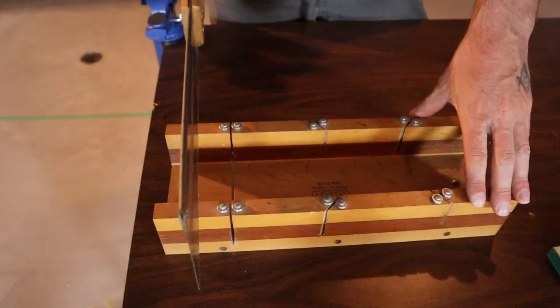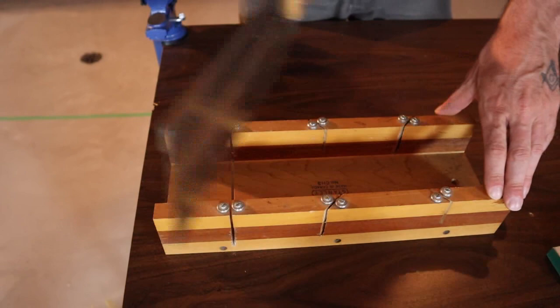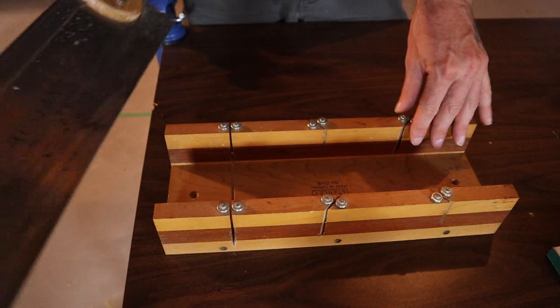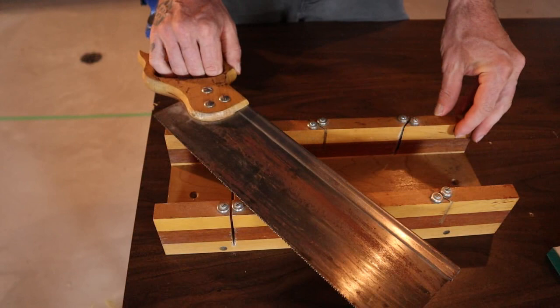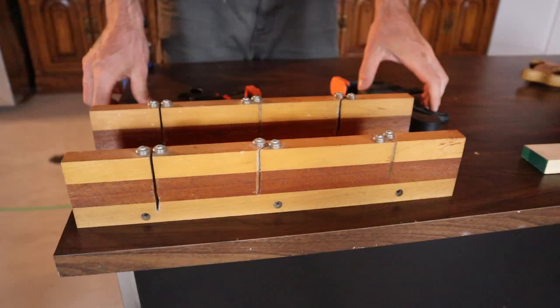Now this miter box I have has 90 degree and 45 degree cuts. A lot of ones you'll buy will have 22 and a half degrees, which is between the 90 and the 45, and often they'll have like a 45 degree bevel cut on either end so you can lay trim down or wood down and cut like that. But just with 90s and 45s you'll get a lot of work done with a miter box like that.